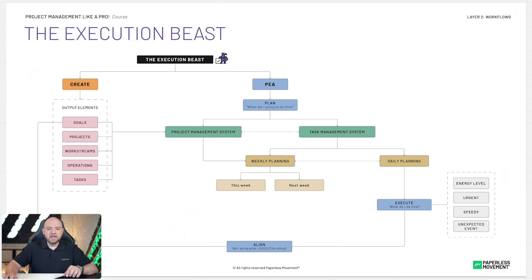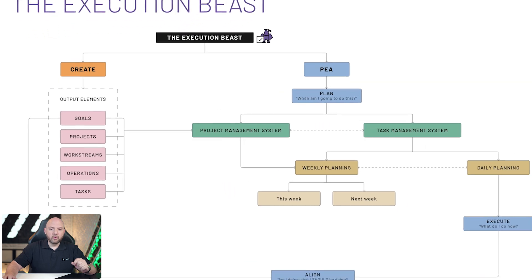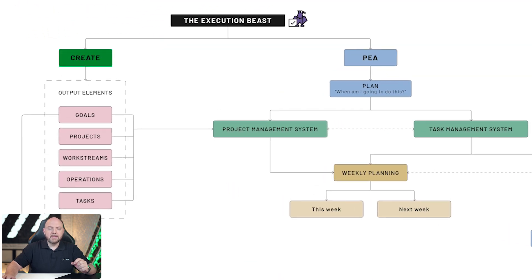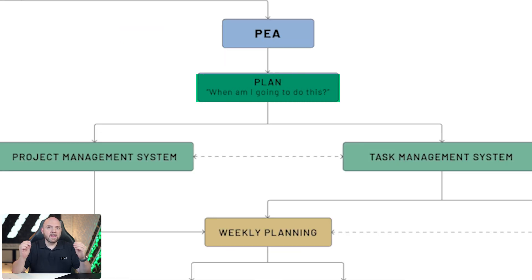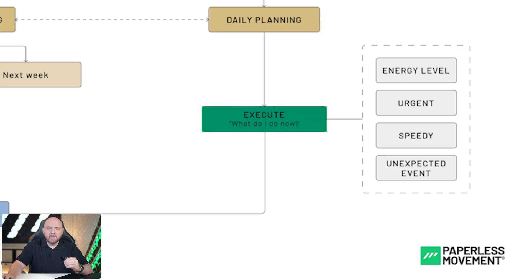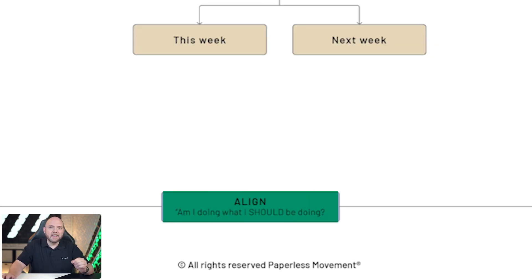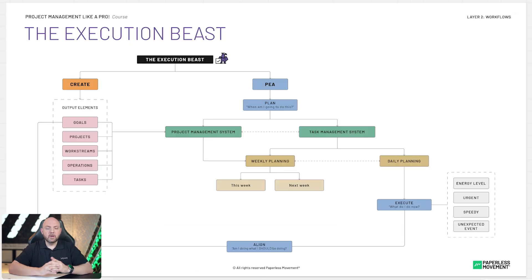The execution beast is split into two things: Create and PEER. PEER simply stands for Plan, Execute, and Align. Plan answers the question 'When am I going to do this?' Execute answers 'What do I do now?' And Align answers 'Am I doing what I should be doing?'